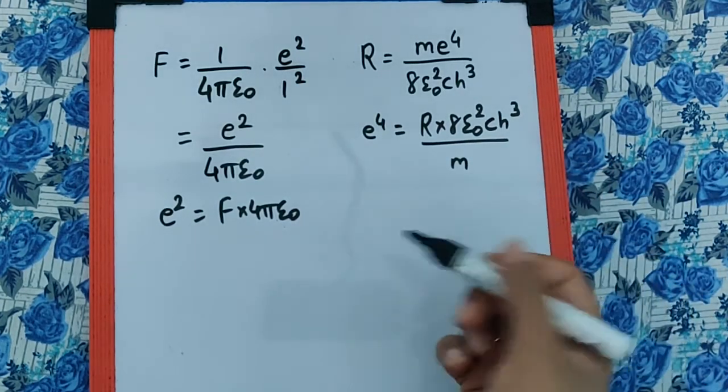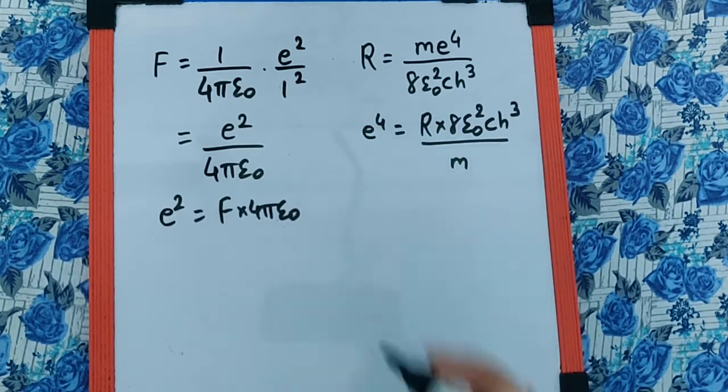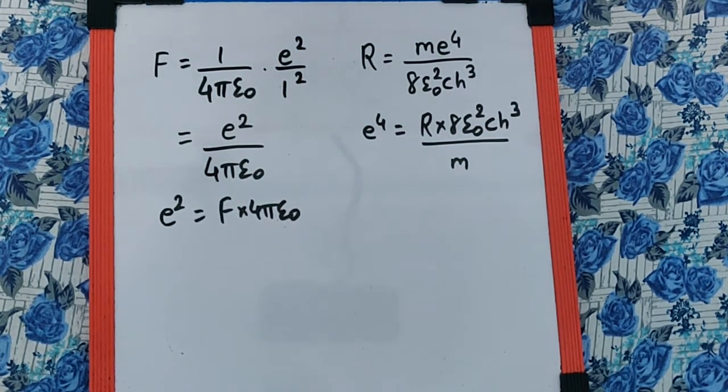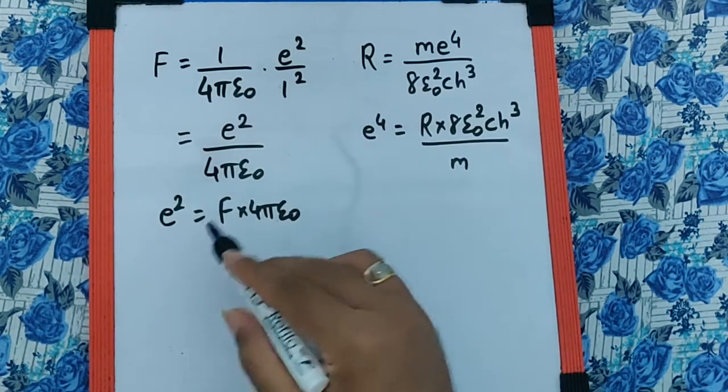Now if you are wondering why I have taken e on one side, it is because if you check all the options I do not find the value e present in any of the options. It means we are supposed to eliminate that, and that's why I have taken it on one side on both the equations.